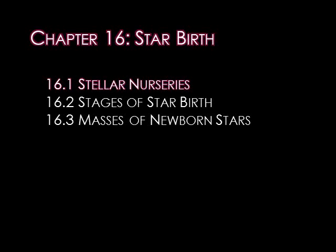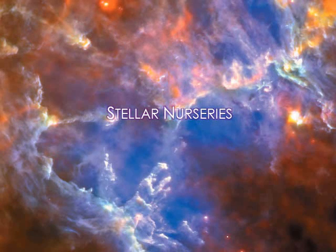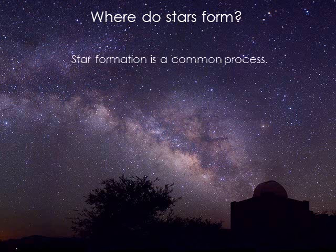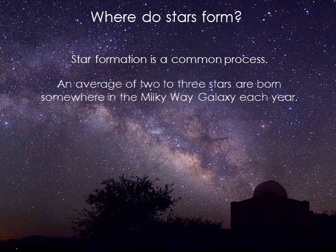In this lecture, we'll learn where in our galaxy stars form and why they form in the first place. Within the disk of our galaxy are vast clouds of gas and dust from which stars are born. These are the stellar nurseries of the Milky Way. Star formation is a common process — an average of two to three stars are born somewhere in the Milky Way each year. The dark patches we see in the disk of the Milky Way are interstellar gas clouds, the raw material for star formation.